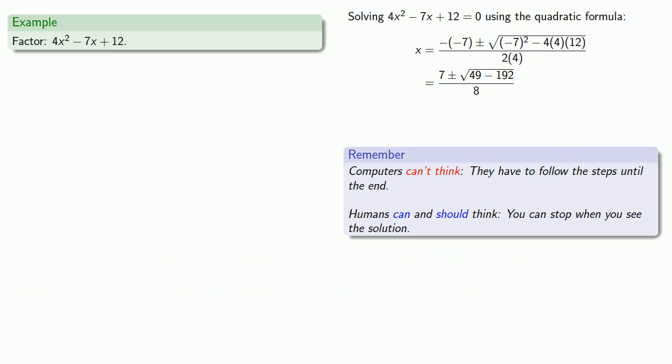In this case, while the quadratic formula requires us to subtract, we can look at this 49 minus 192 and immediately recognize that's going to be a negative number, and our solution will not be a real number. So we don't actually have to do the subtraction. We can stop here and say that we have no real solutions.